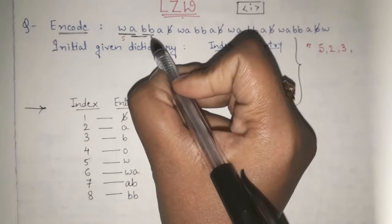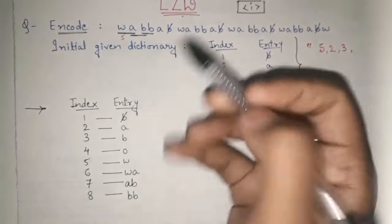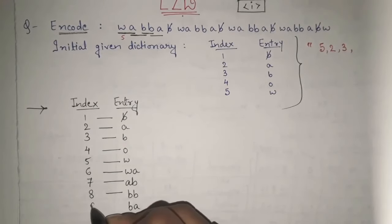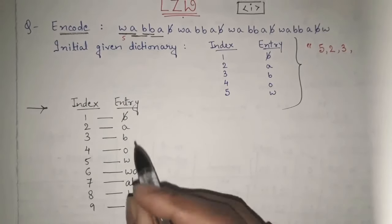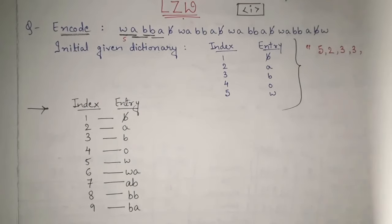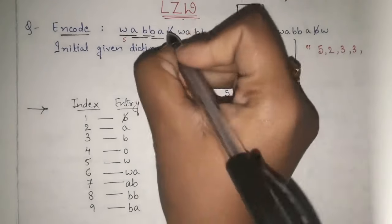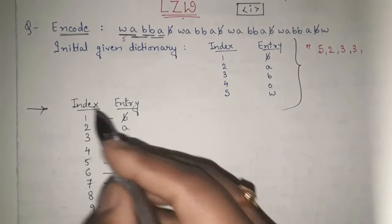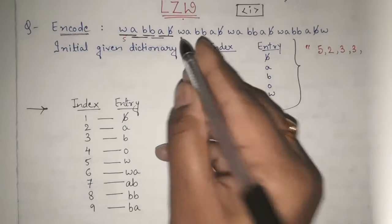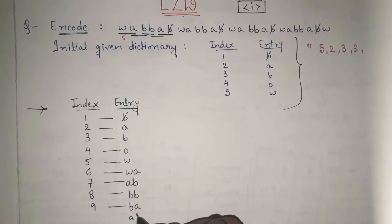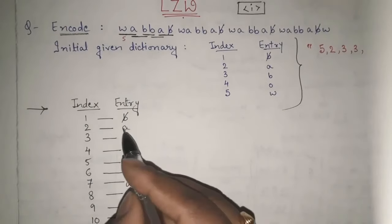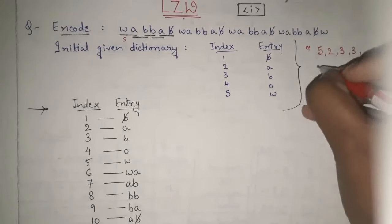Starting with A: A B-blank is not present, so I add A B-blank at index 10 and send the code for A, which is 2. Then starting with B-blank: B-blank is already present. B-blank W is not present, so I add B-blank W at index 11 and send the code for B-blank, which is 1.